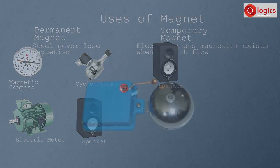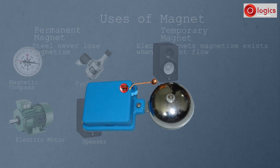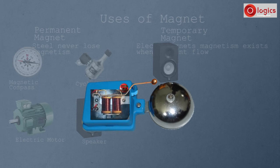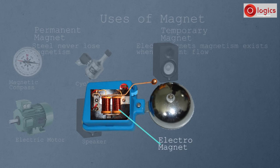Electric bells are another example of temporary magnets. Observe the inside of an electric bell — these coils are electromagnets. When current passes through the coils, they become magnets and attract this hammer towards them. Due to this, the hammer strikes the gong and the bell rings.